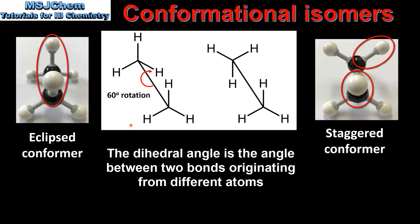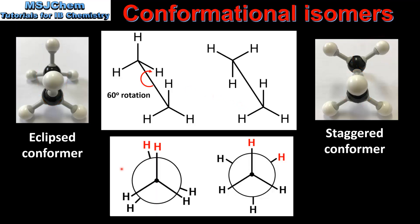Here we can see the sawhorse projections of the eclipsed conformer on the left and the staggered conformer on the right. Starting with the eclipsed conformer, if we rotate this carbon-to-carbon single bond by 60 degrees we get the staggered conformer on the right. At the bottom of the screen we have the two Newman projections for the two conformers.